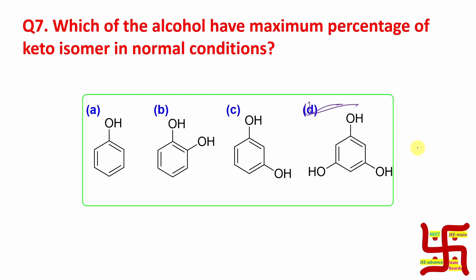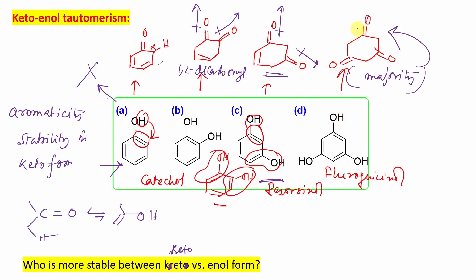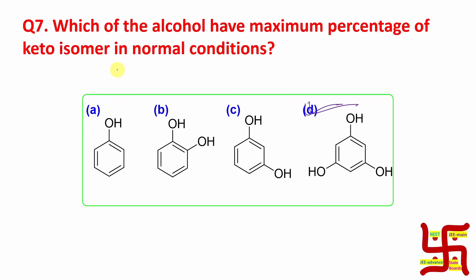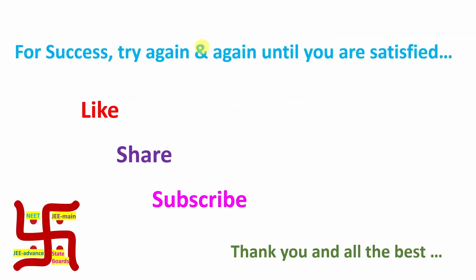So our question was: which alcohol has maximum percentage of keto isomer in normal condition? That is phloroglucinol, because it produces a 1,3,5-tricarbonyl compound. Additionally, in this case the dipoles are arranged such that they are all at about 120 degrees apart, making the net dipole moment zero — so repulsion is minimum. That's why phloroglucinol has maximum keto isomer content. Option D is the answer. I believe this video was useful. Thanks for watching — see you in the next video, bye!